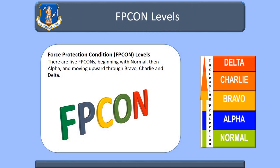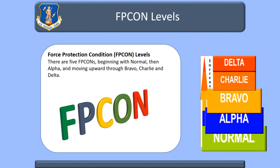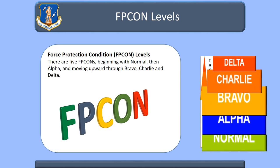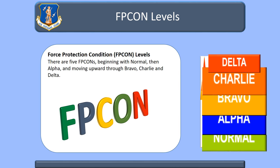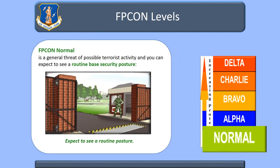The DOD determines the Force Protection Conditions, or FPCONs, based on the threat environment. There are five FPCONs: Normal, Alpha, Bravo, Charlie, and Delta. FPCON Normal is a general threat of possible terrorist activity, and you can expect to see a routine-based security posture.